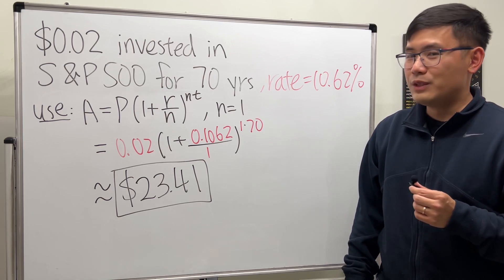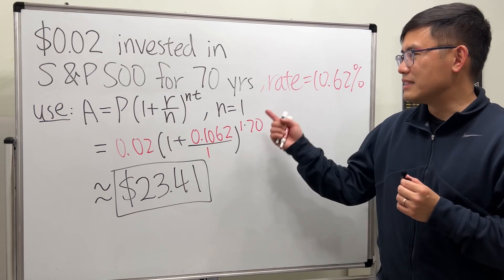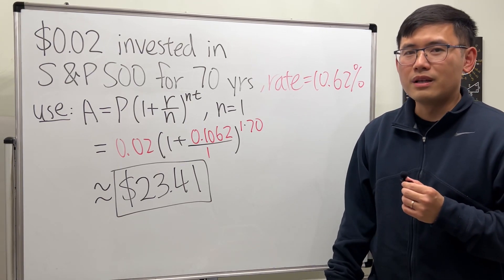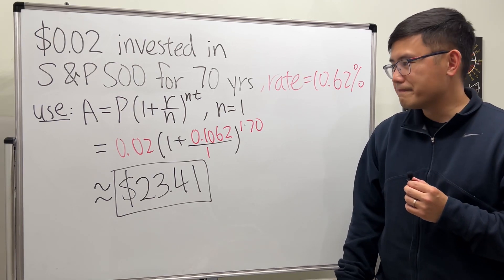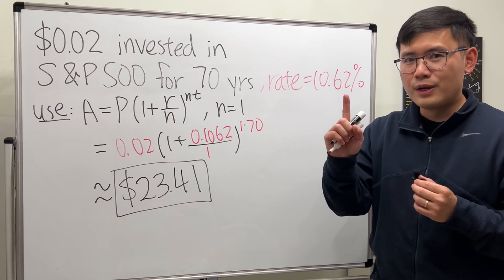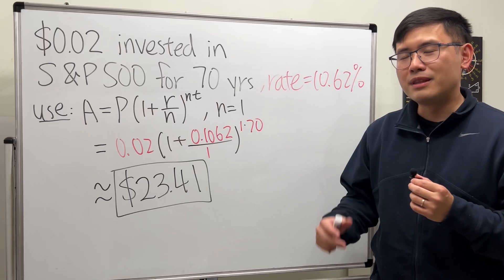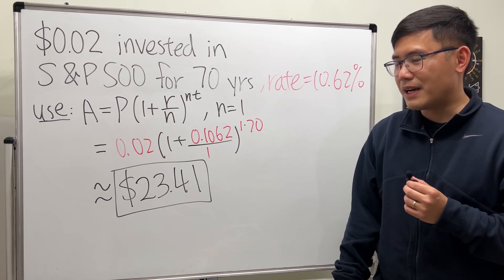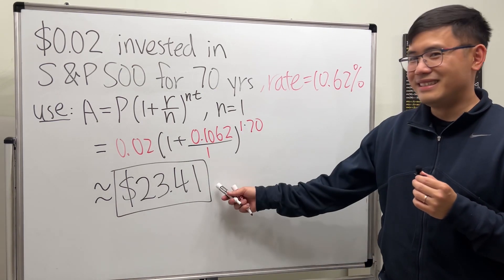And who knows how much a Big Mac will cost after 70 years? Right now it's about like what, six, seven dollars for a Big Mac burger in 2024. It used to be one dollar when I was working at McDonald's, but they had like a Monday special but no more. Anyway though, did this answer surprise you?